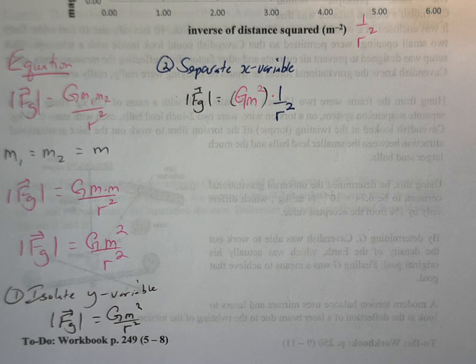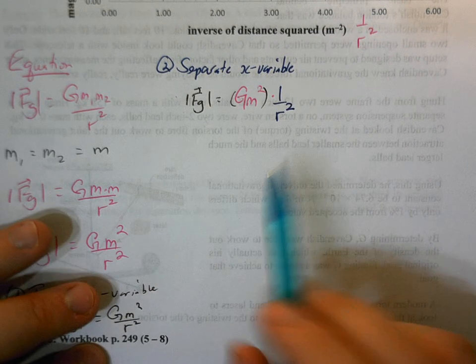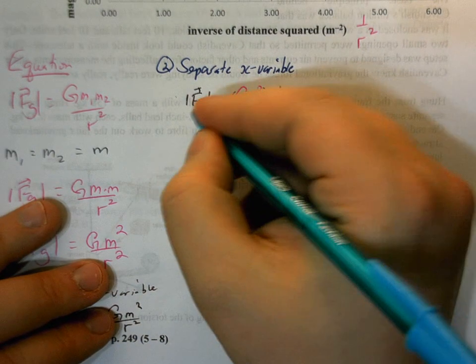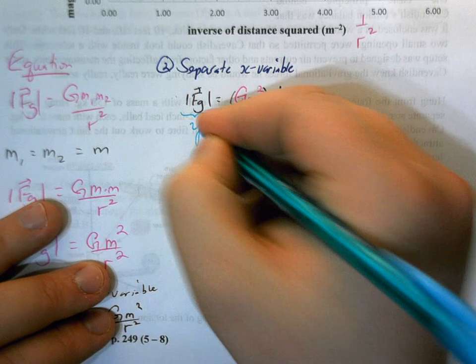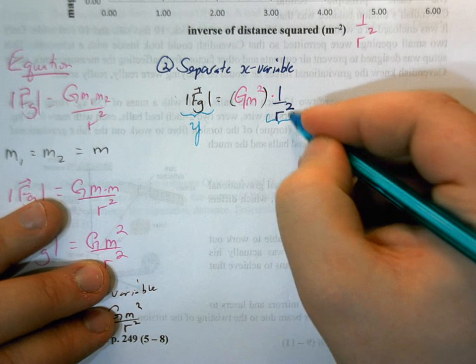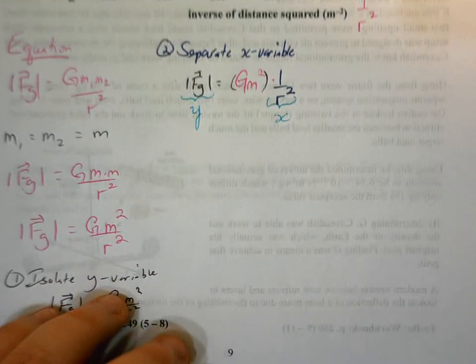Now I have everything isolated in this form Y equals MX plus B, because we're told on our graph FG is the Y variable. We're told one over r squared is the X variable.